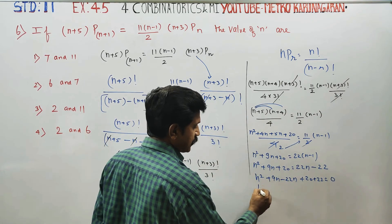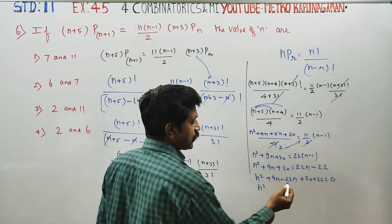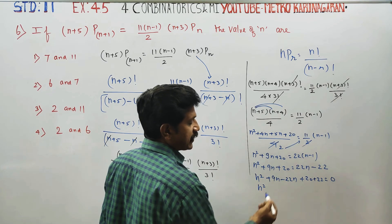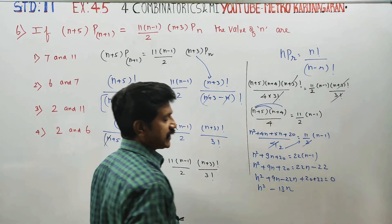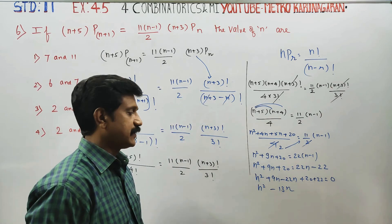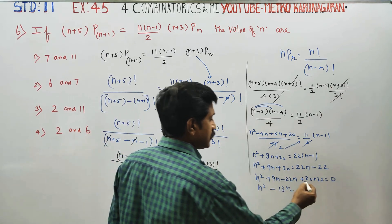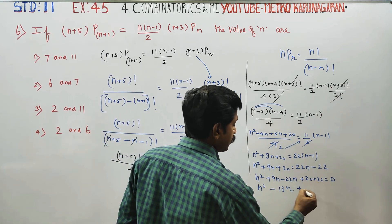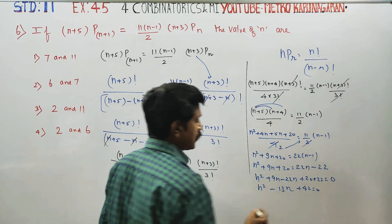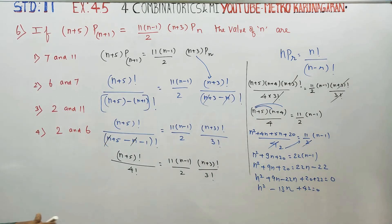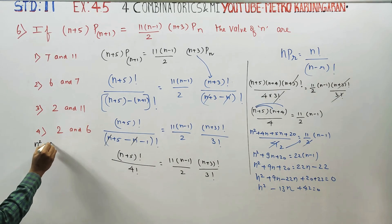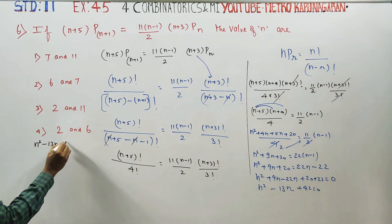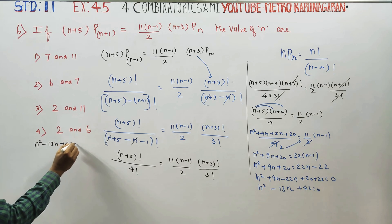So what do we get? n squared, 22 minus 9 gives minus 13n. This is a quadratic equation. So n squared minus 13n plus 42 equal to 0.